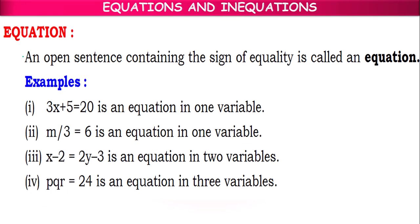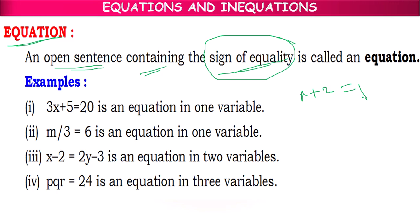So here children, equation means an open sentence containing the sign of equality. So x plus 2 equal to 5 is an open sentence, because it is having a variable, so the variable is open for any value. Along with that, it is also containing an equality sign, so it is called as an equation.